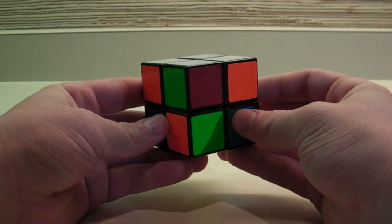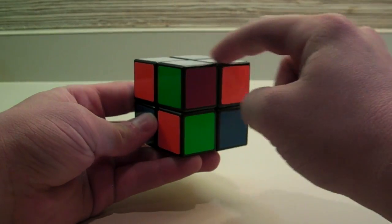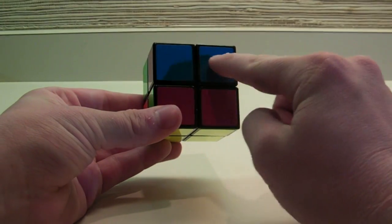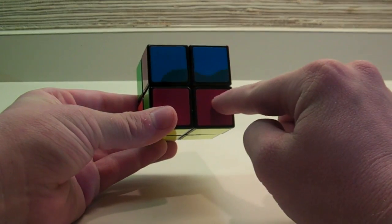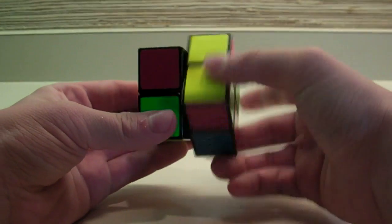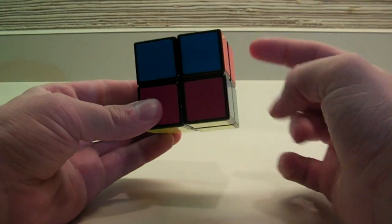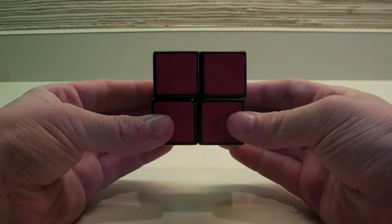If you have the second case I showed you, where two adjacent corners need to be switched on both layers, you hold it so that both solid bars are connected on the back. Then you do the algorithm, and then you turn the top face until it is solved. As you can tell, this is a very easy method to learn.